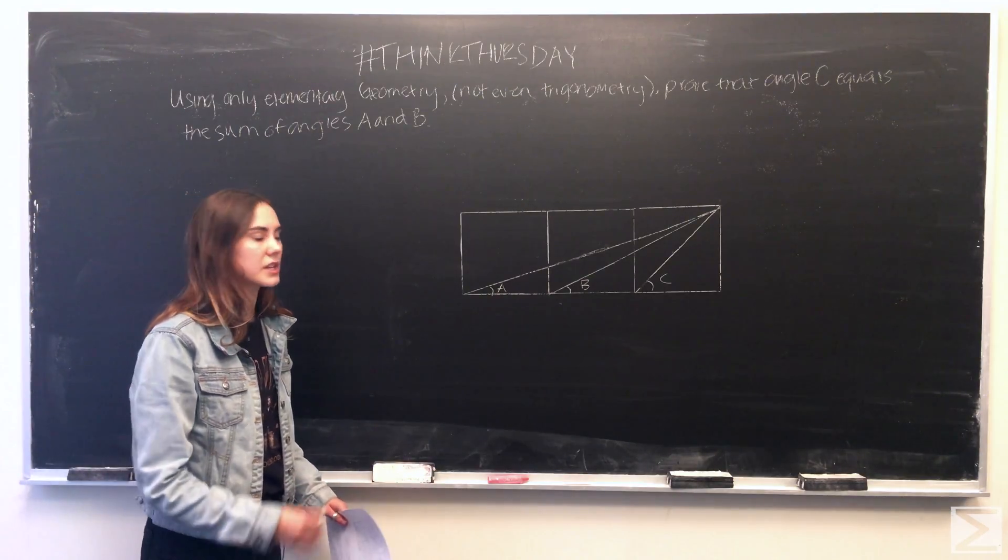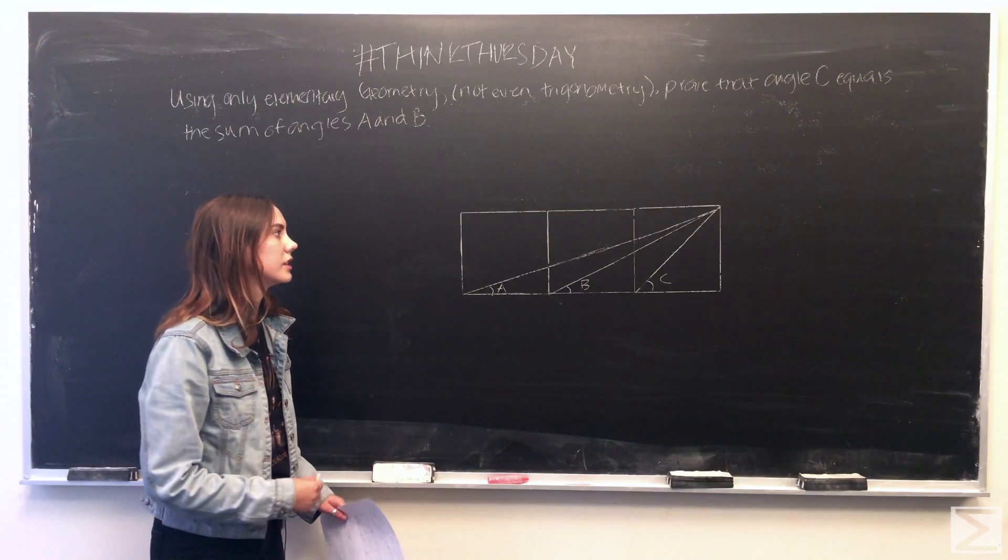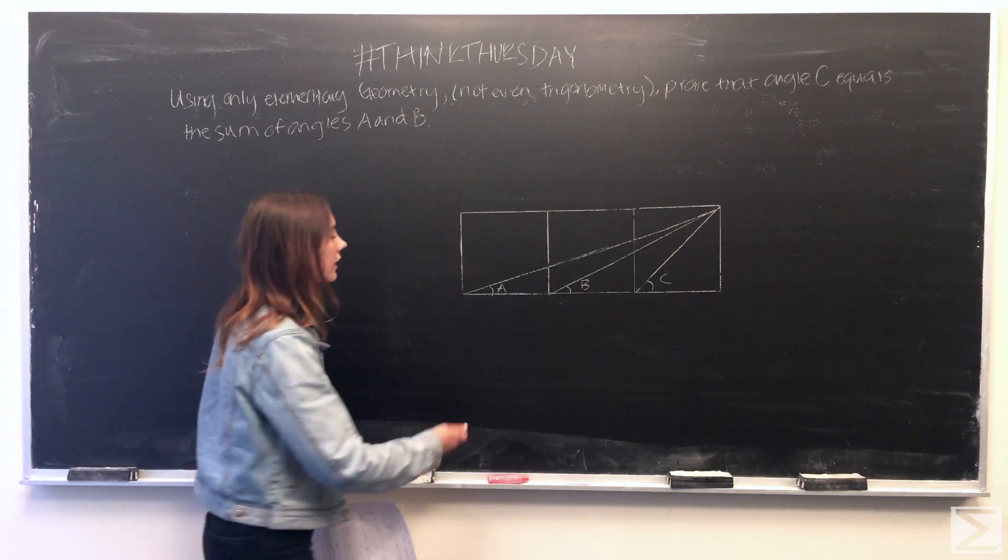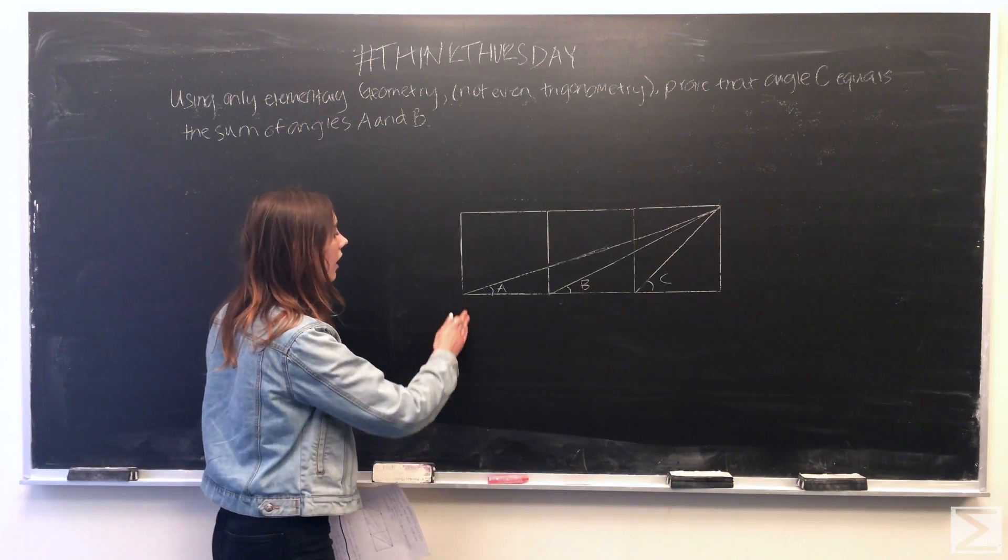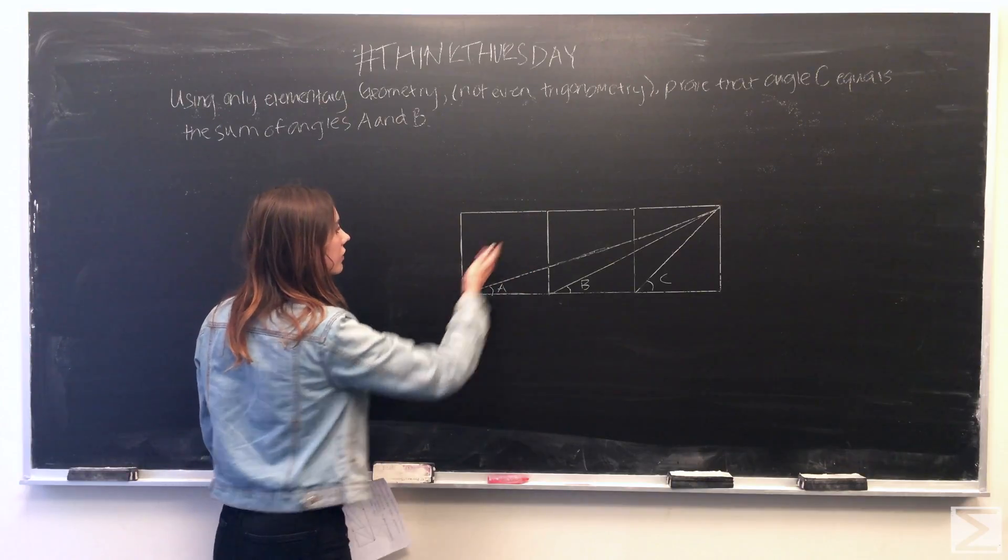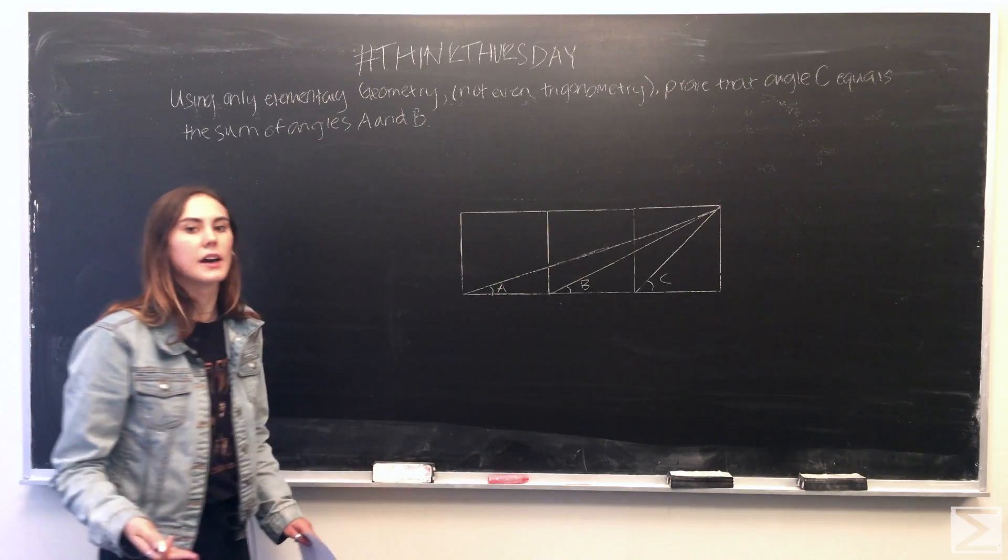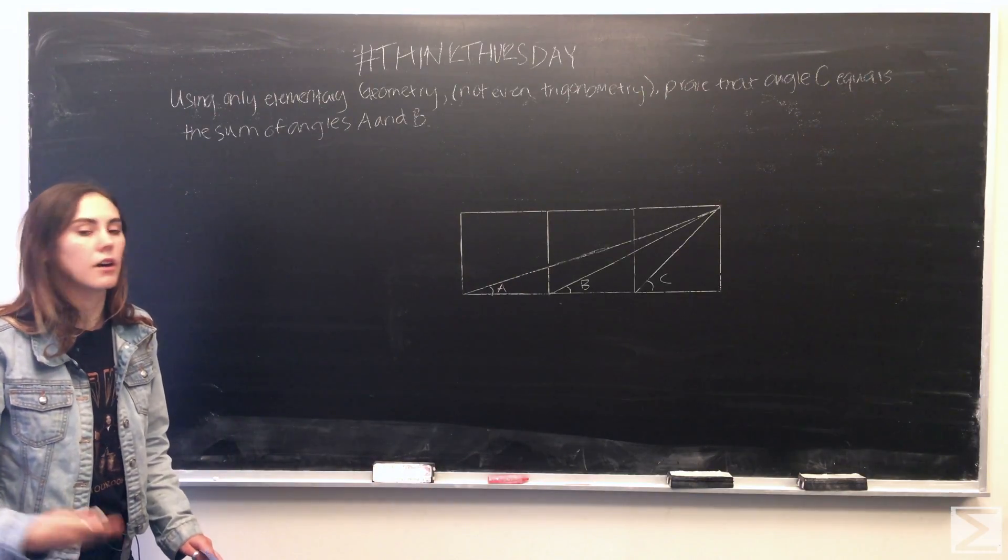So to begin I'm just going to construct two additional squares using the bisection of one of these squares straight down the diagonal as one of the sides of each of these squares.